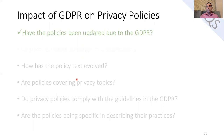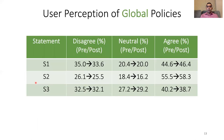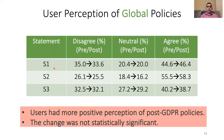We first look at whether users perceived a change in policy presentation by performing an online user study using Amazon Mechanical Turk with 470 participants. We follow a within-subjects design, showing each participant 20 policy snapshots from pre- and post-GDPR for both global and EU sets, thereby exposing each participant to all conditions of the study. For each snapshot, we asked participants to indicate their agreement with each of three statements on a five-point Likert scale.